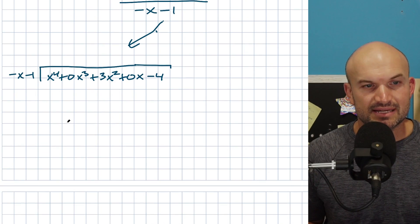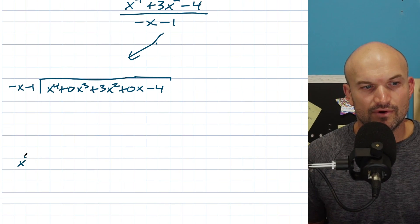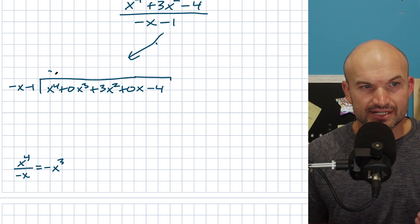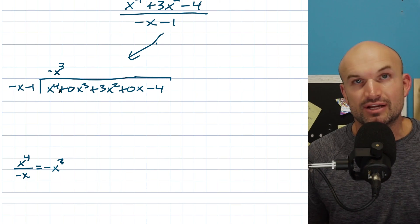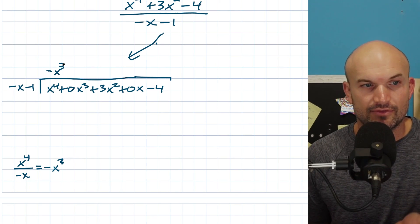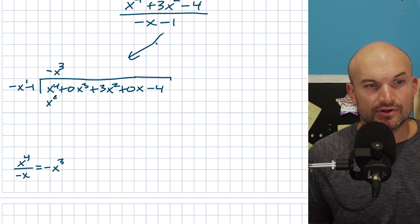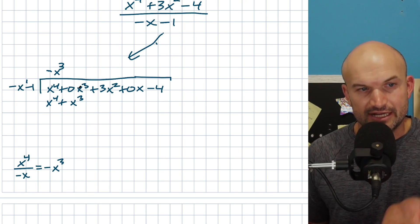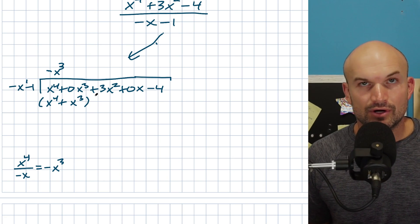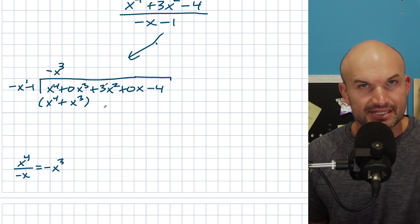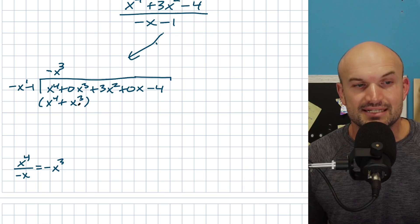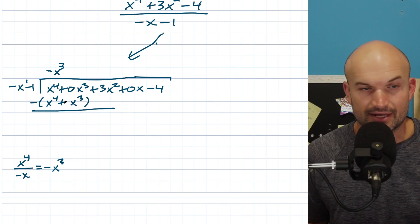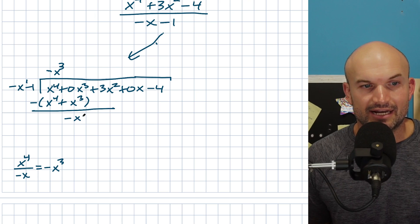So negative x divides into x⁴: x⁴ divided by negative x gives negative x³. Multiplying back: negative x³ times negative x gives positive x⁴ — negatives cancel, exponents add to give four, correct. Then negative x³ times negative 1 gives positive x³. You don't need a place value here since subtracting zero. x⁴ minus x⁴ is zero. Zero x³ minus x³ leaves negative x³.